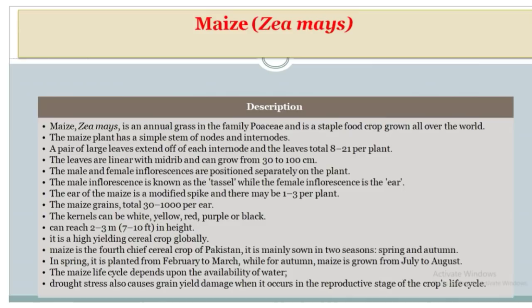Maize is an annual grass in the family Poaceae and is a staple food crop grown all over the world. The maize plant has a simple stem of nodes and internodes, with a pair of large leaves extending from each internode, totaling 8–20 leaves per plant. The leaves are linear with a midrib and can grow from 30–100 cm. The male inflorescence is known as the tassel, while the female inflorescence is the ear. The ear of the maize is a modified spike and there may be 1–3 per plant. The maize grains total 300–1000 per ear. The kernels can be white, yellow, red, purple, or black. It can reach 2–3 meters (7–10 feet) in height.